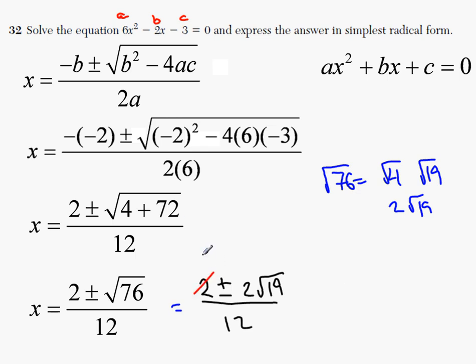And 2 goes into 1 time. 2 goes into 12 6 times. Same thing here. So you get 1 plus or minus radical 19 over 6. This is what x equals.